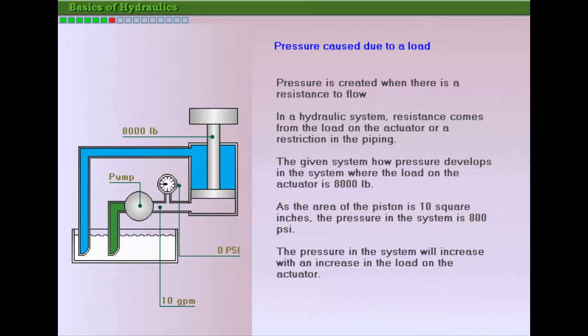In the given example, the rise in system pressure is due to the resistance provided by the load on the piston. Observe that the pressure in the gauge is zero at the start.